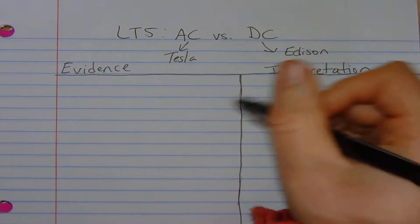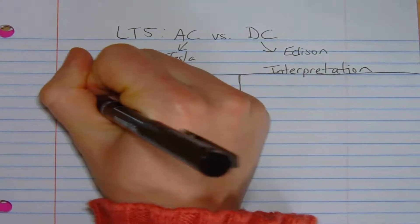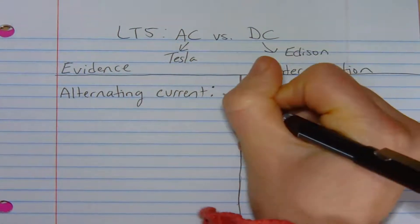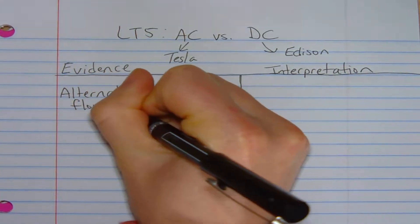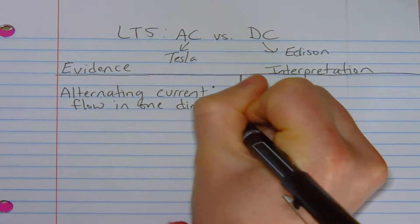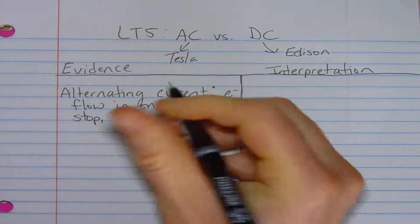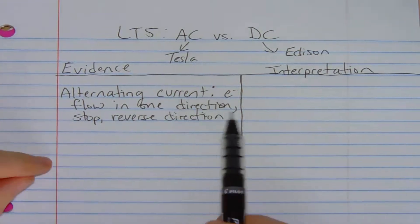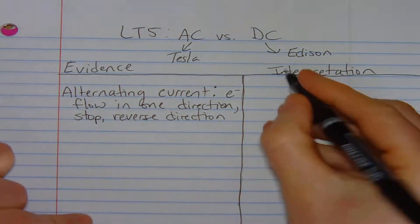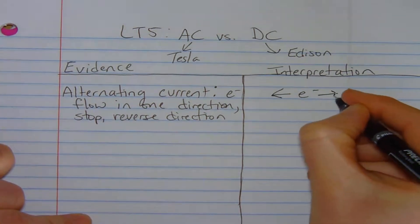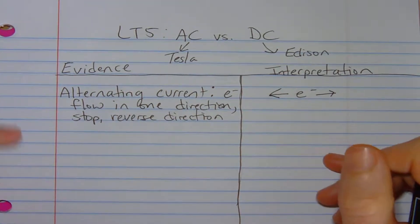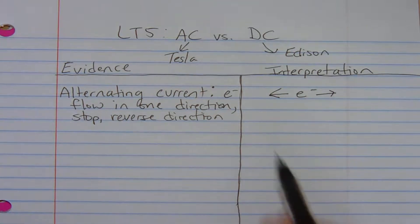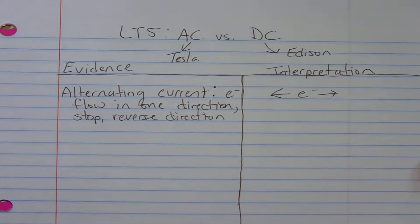What we're going to start out with is defining both alternating and direct. So we'll start with alternating current. Alternating current is our AC, and this is where electrons flow in one direction, they stop, and then immediately reverse direction. This is a continuous process, so it's not like they do it once. Think of them as vibrating in place. And this is what Tesla figured out was very beneficial to long-distance power transmission.